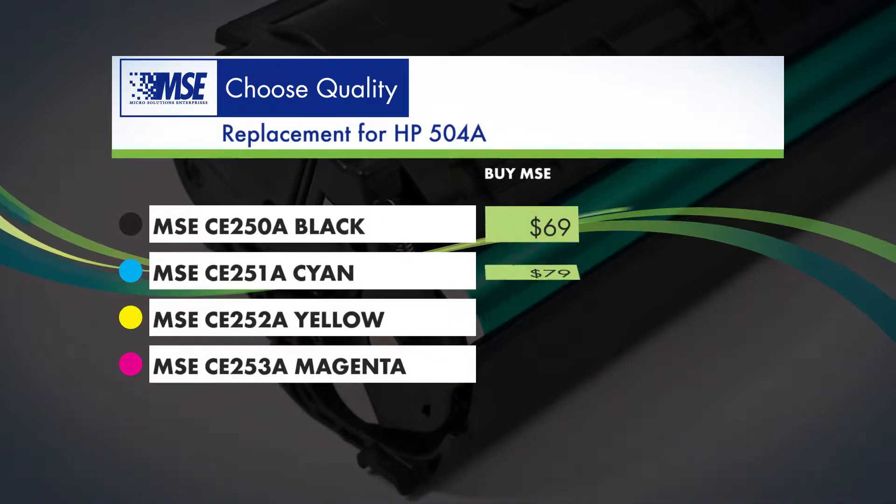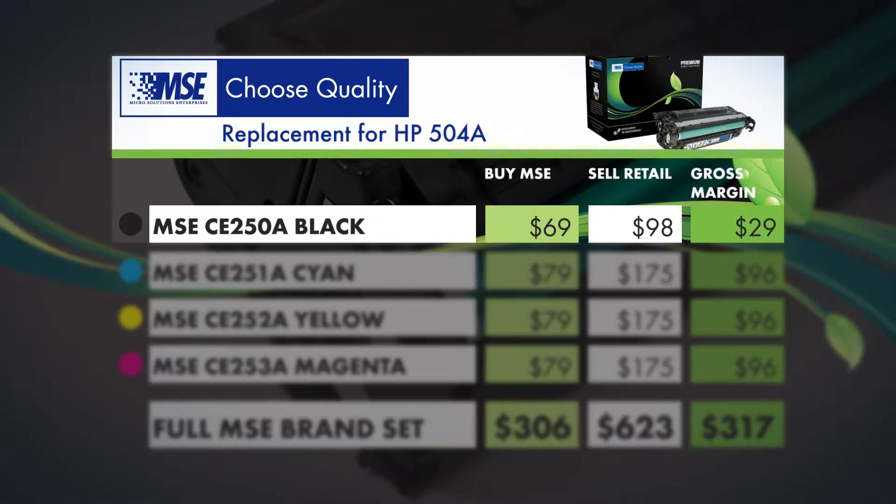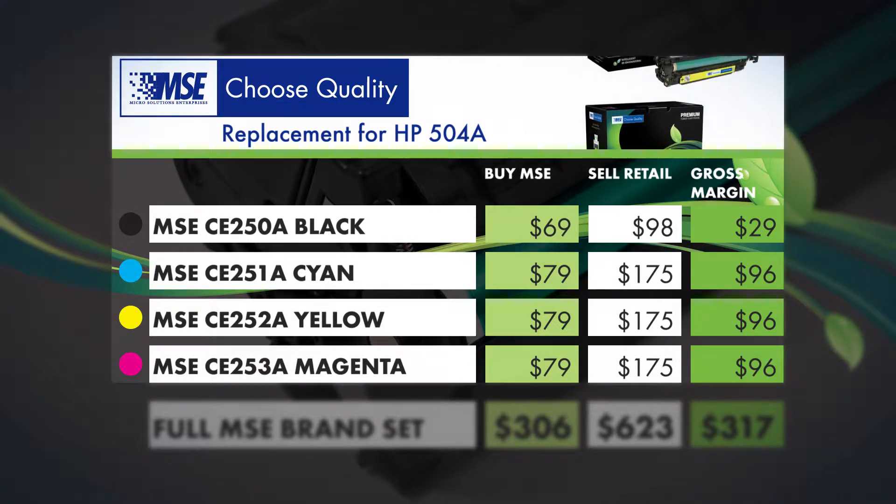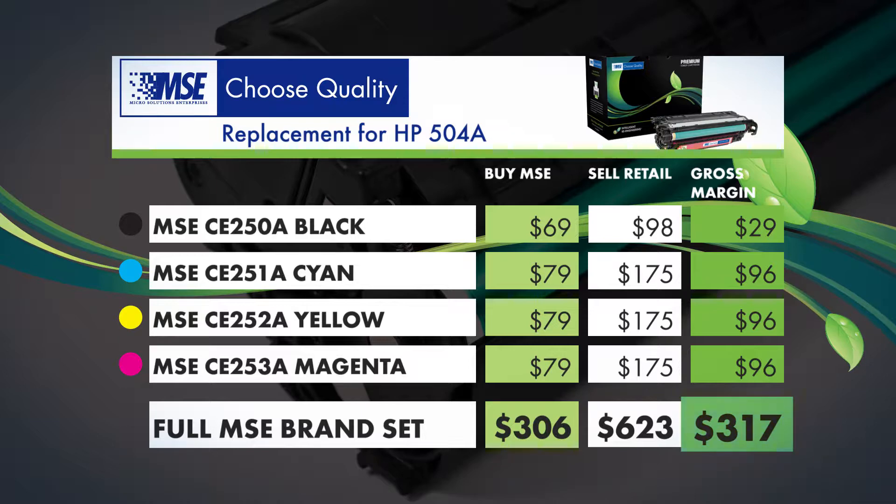Now let's look at the approximate MSE price model. For the same black cartridge, you're making $29 each and $96 for the color cartridges. For the set, your gross profit is $317, almost twice the OEM gross profit. And your customer is only spending $623 for the complete toner set. You make a healthy margin and your customer saves over 30% on supplies.